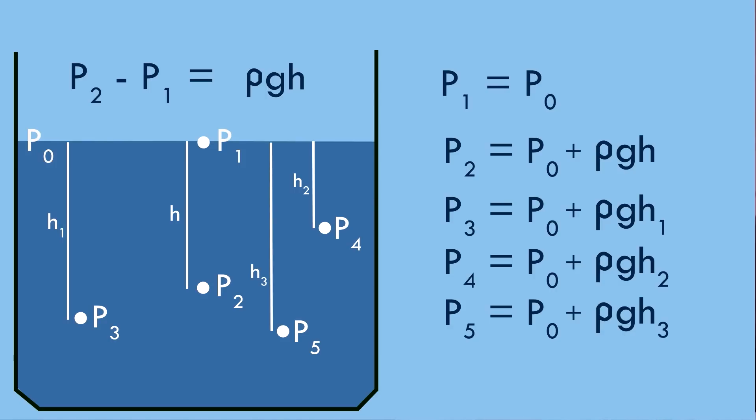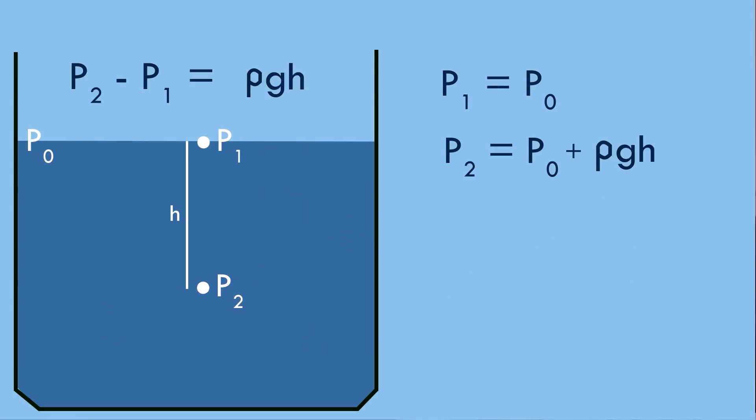So let's keep that result in our minds and let's just focus for a second on just p1 and p2. We know that p1 is equal to p0 and p2 is equal to p0 plus ρgh.